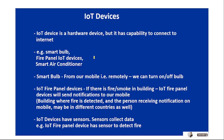Before we discuss Azure IoT Hub, let's first discuss what an IoT device is. An IoT device is a hardware device that has the capability to connect to the internet. Examples include a smart bulb, fire panel IoT devices, and a smart air conditioner. For instance, from our mobile app we can remotely turn on or off the smart bulb.